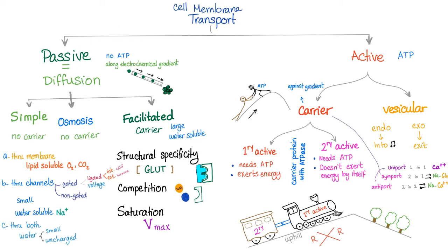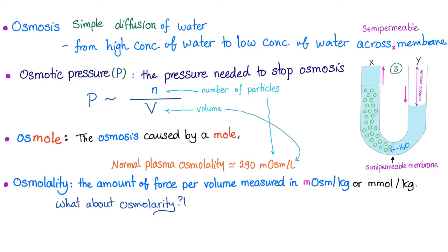Cell membrane transport is either passive or active. Osmosis is just simple diffusion — passive, no need for ATP, no need for a carrier. Osmosis is the simple diffusion of water from high concentration of water to low concentration of water through a semi-permeable membrane, or from low concentration of solute to high concentration of solute. Mainly sodium.